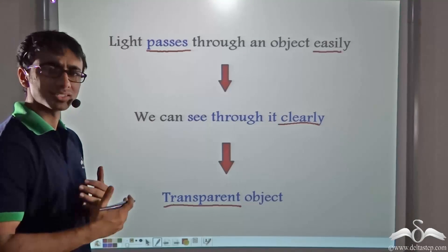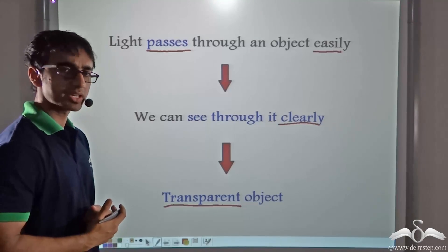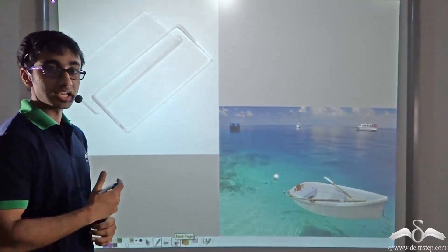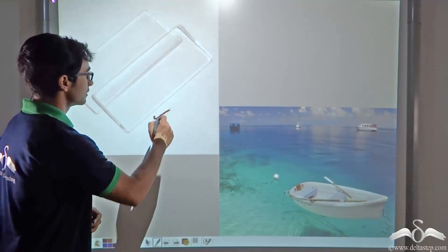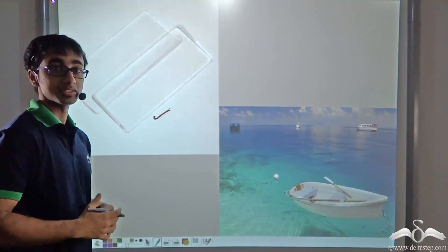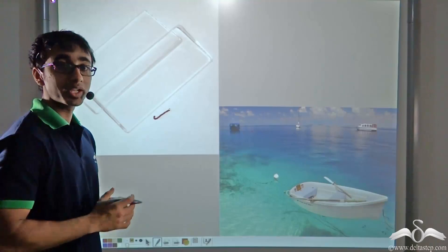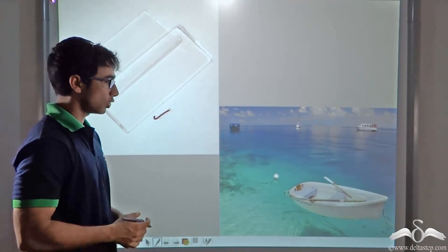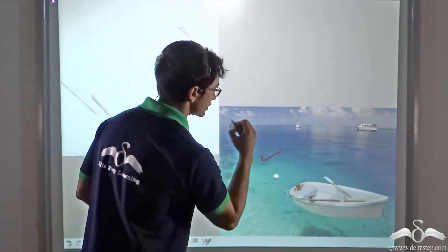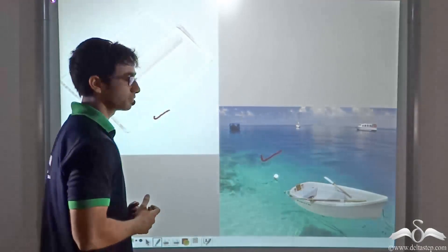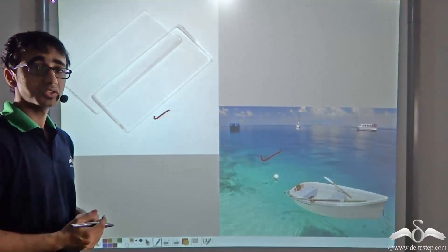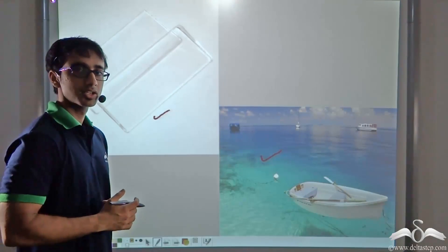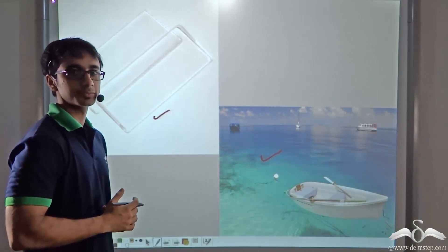So what are some other examples of transparent objects? The glass that you use at home for drinking water is a transparent object because you can see clearly through it. Also, water is a transparent object. You must have seen that even when you pour water inside the glass, you are still able to see through it.